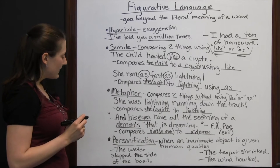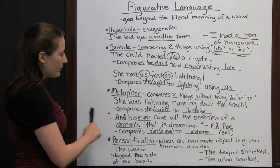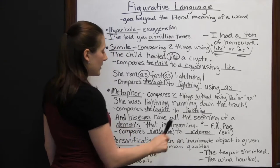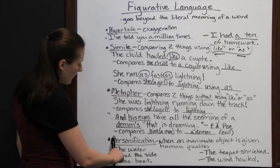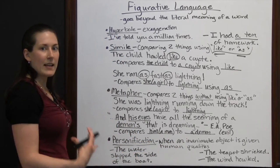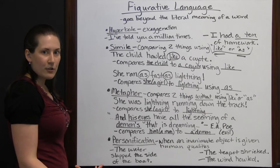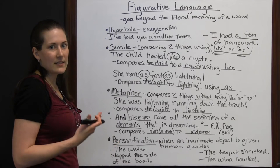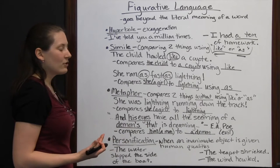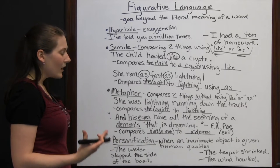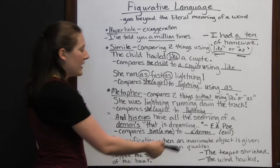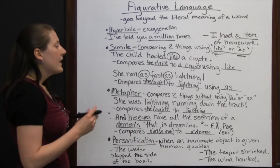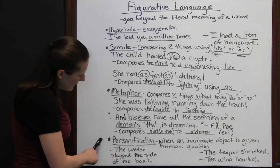The last piece of figurative language we're going to discuss is personification, which is when an inanimate object is given human qualities. You are personifying it — making it do something a person would do, even though it's not something that can do these things. Remember, inanimate objects are going to be things that are not alive: a chair, a teapot, the wind, water — those are inanimate objects.